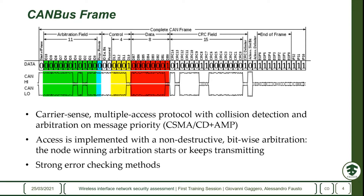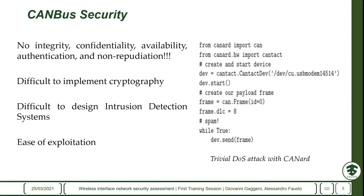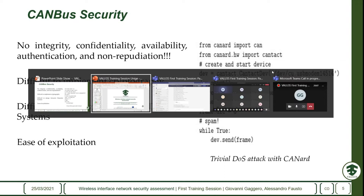Notably, the CAN protocol does not implement any particular security mechanisms — there is no cryptography, no authentication, and it is also quite easy to implement a denial of service attack, for example by injecting packets with the highest priority level, making the channel unavailable. It is also quite difficult to implement mechanisms like intrusion detection systems on CAN, so the protocol essentially has no security mechanisms.